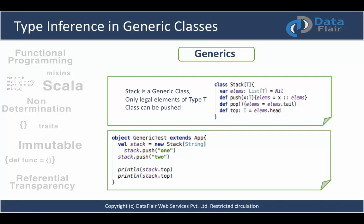After defining a stack of String, we use the helper methods defined in the Stack class with strings. If you try to push an integer into your String stack, it won't accept it. We then print 'stack.top'. So if you instantiate your stack of String, it will only accept String type elements and nothing else. This is how you achieve type inference in generic classes — you define a value named stack, directly instantiate it with a type, and Scala infers the rest.